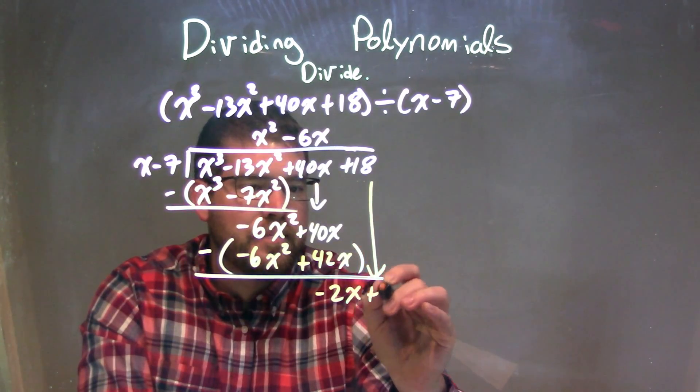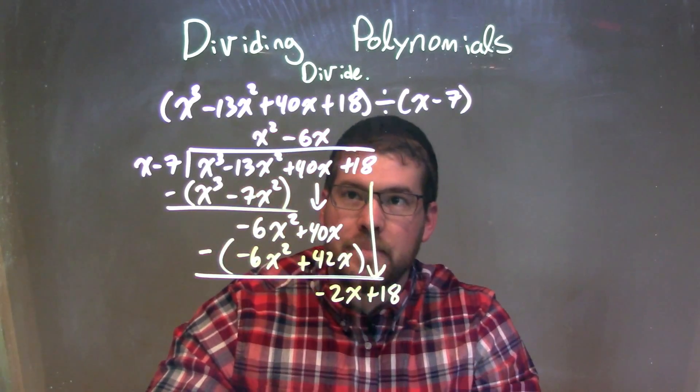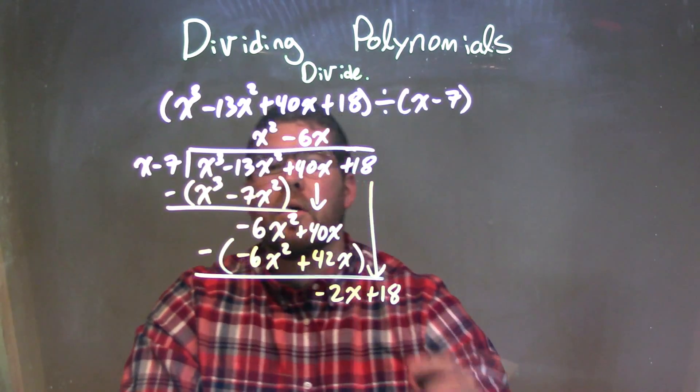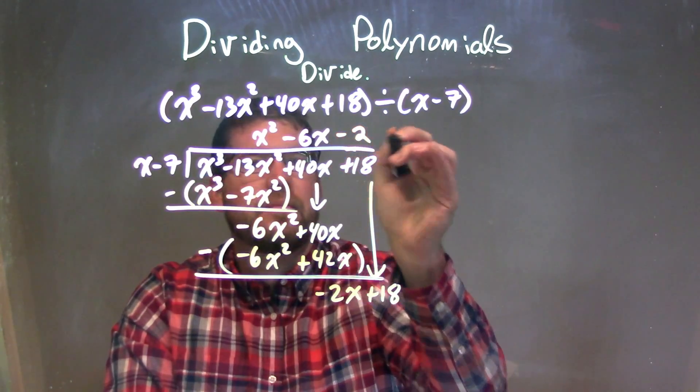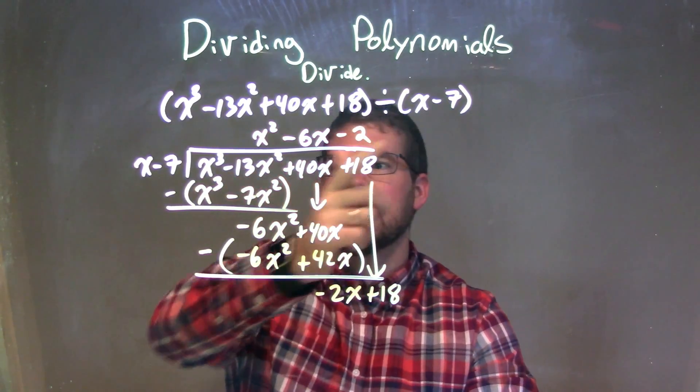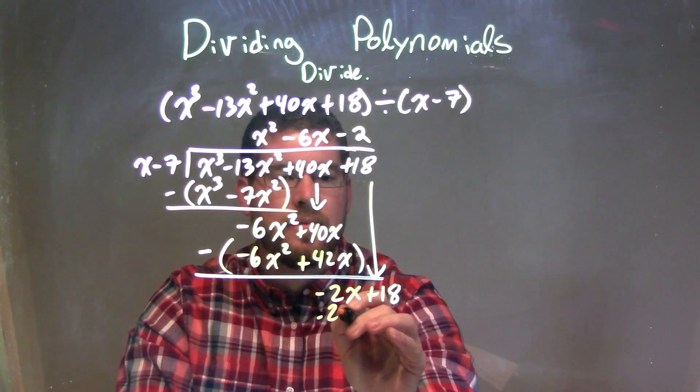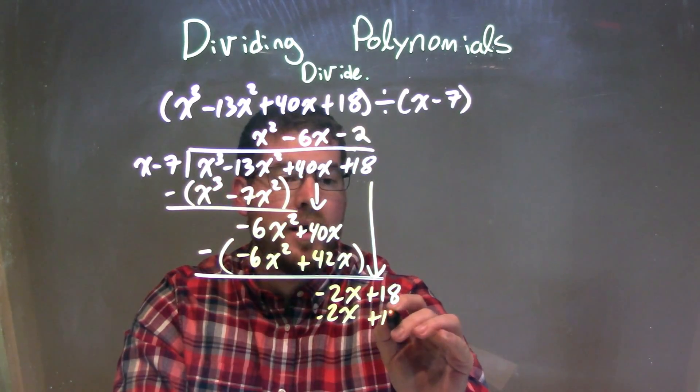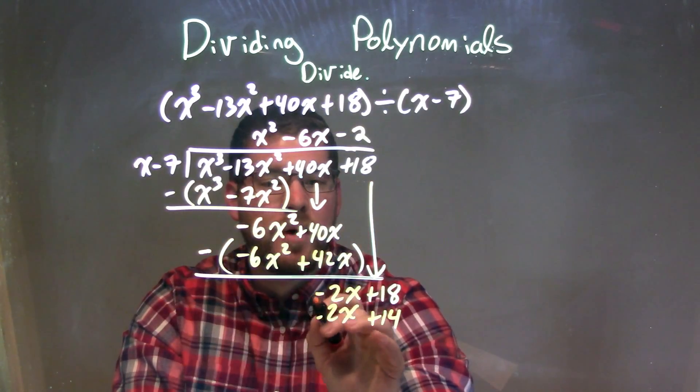Let's bring down the 18 and do this again. What times x is a negative 2x? Well, that's just a negative 2. Minus 2 times x is minus 2x. Minus 2 times negative 7 is a positive 14 - a negative times a negative is a positive.